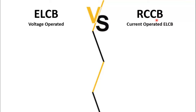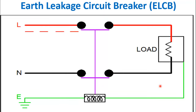In my previous video I gave the differences between MCB and MCCB, but these two types of circuit breakers are different from the MCB and MCCB because they only operate when they detect the leakage current in the earth conductor. The working principle of these two circuit breakers are different, and I will explain the differences between these two breakers at the end of this video.